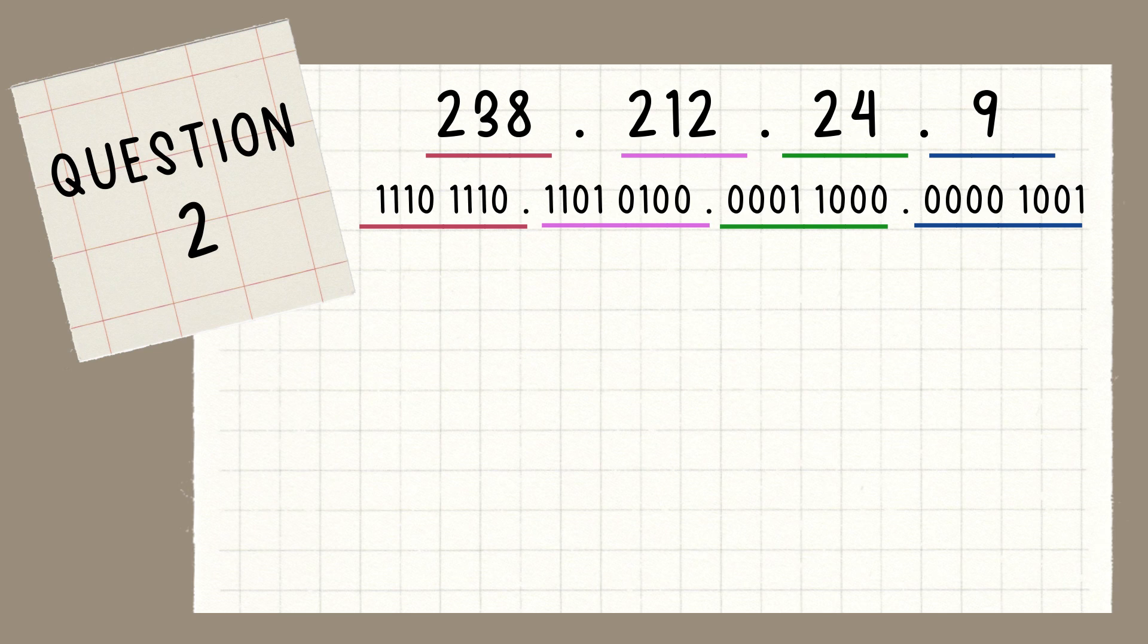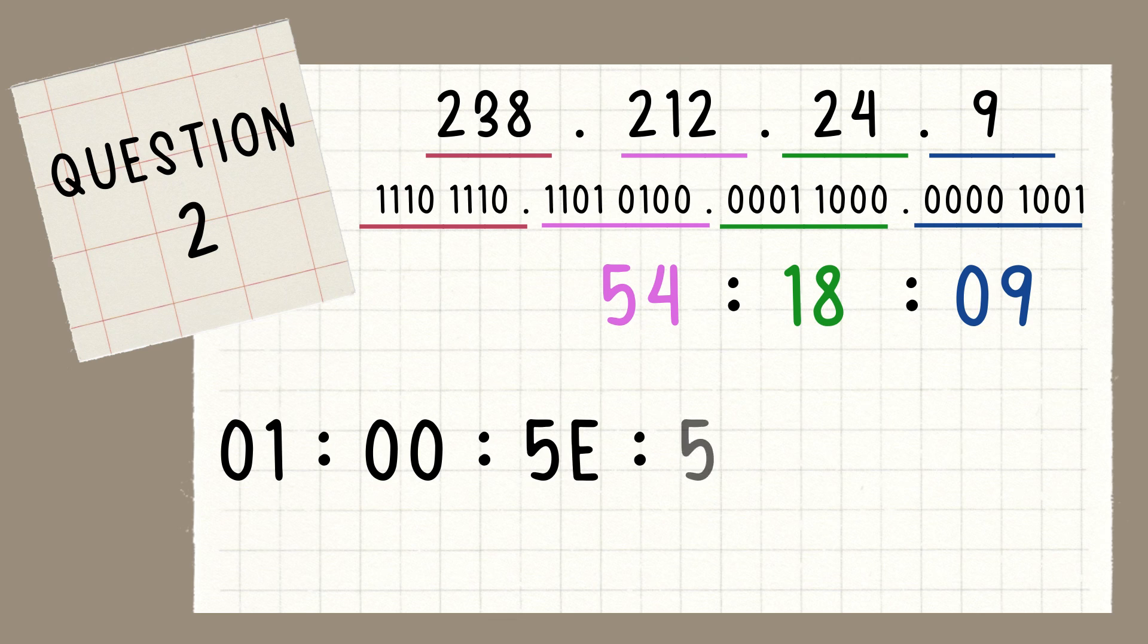So, we take all of the hexadecimal numbers. So, the result will be 01-00-5E-54-18-09.